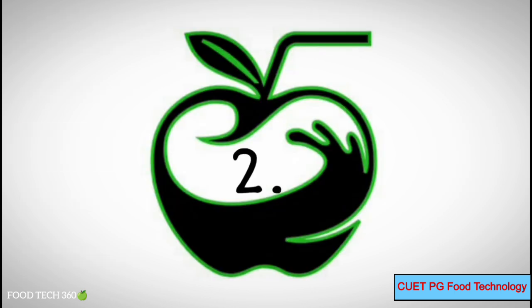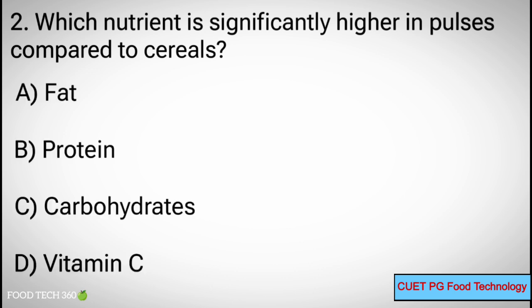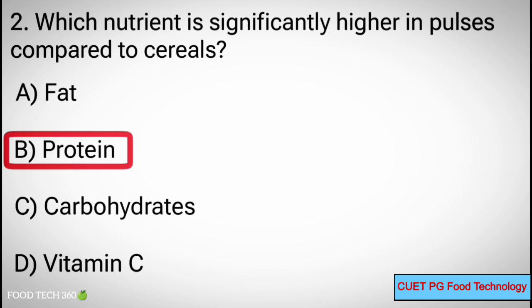Question number 2: Which nutrient is significantly higher in pulses compared to cereals? Options: A. Fat, B. Protein, C. Carbohydrates, D. Vitamin C. Correct answer: B. Protein.